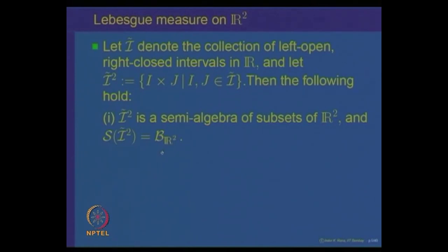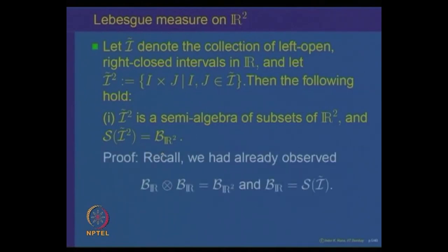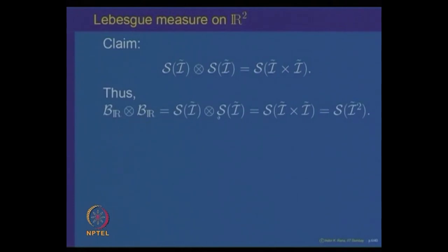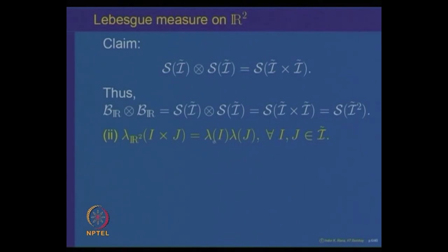The Lebesgue measure of a rectangle I×J is λ(I×J) = λ(I)·λ(J), which is obvious because we obtained the product measure as an extension of the measure on rectangles. The Lebesgue measure on R² is the natural extension of the notion of area in the plane — this property is built into the definition of the product measure.